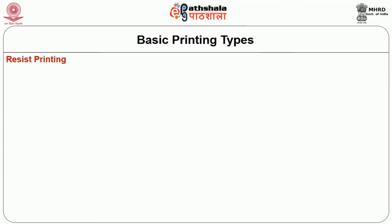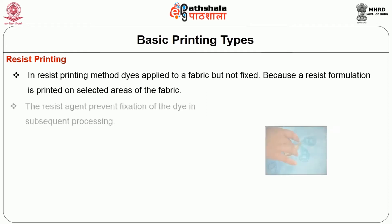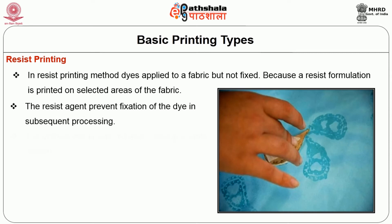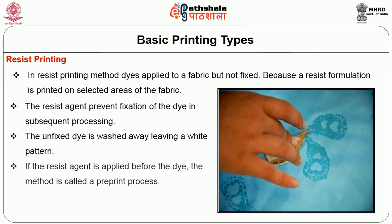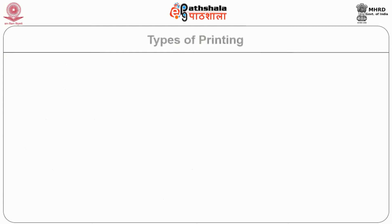Next, resist printing. In the resist printing method, dye is applied to a fabric but not fixed because a resist formulation is printed on selected areas of the fabric. The resist agent prevents fixation of the dye in subsequent processing. The unfixed dye is washed away, leaving a white pattern. If the resist agent is applied before the dye, the method is called a pre-print process. This type of printing is older than both direct and discharge methods.